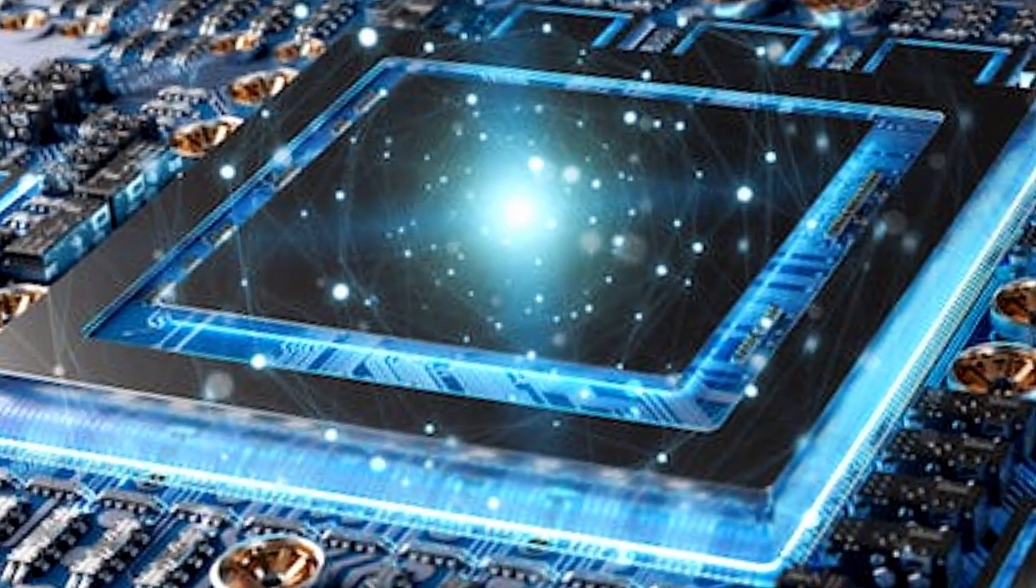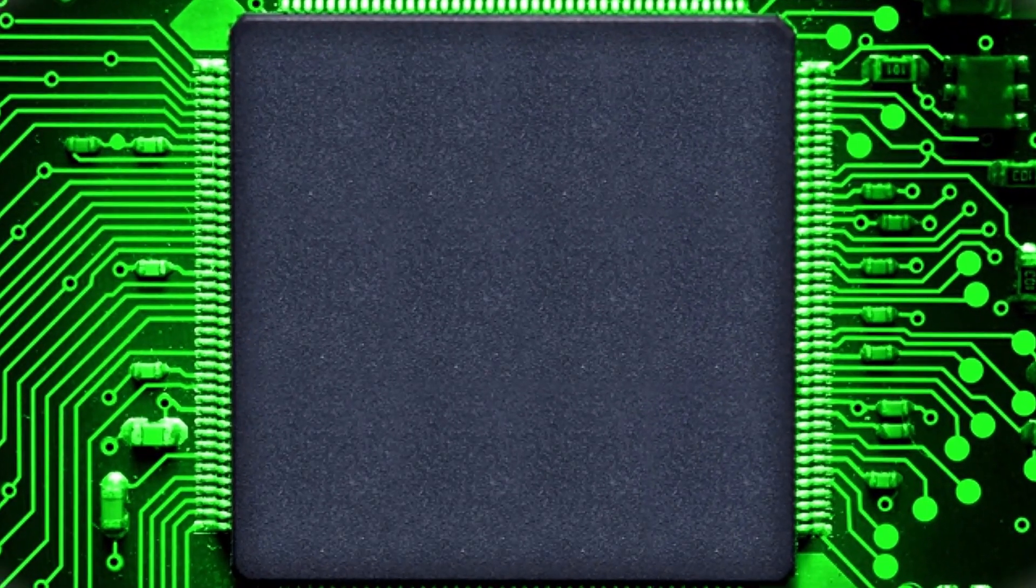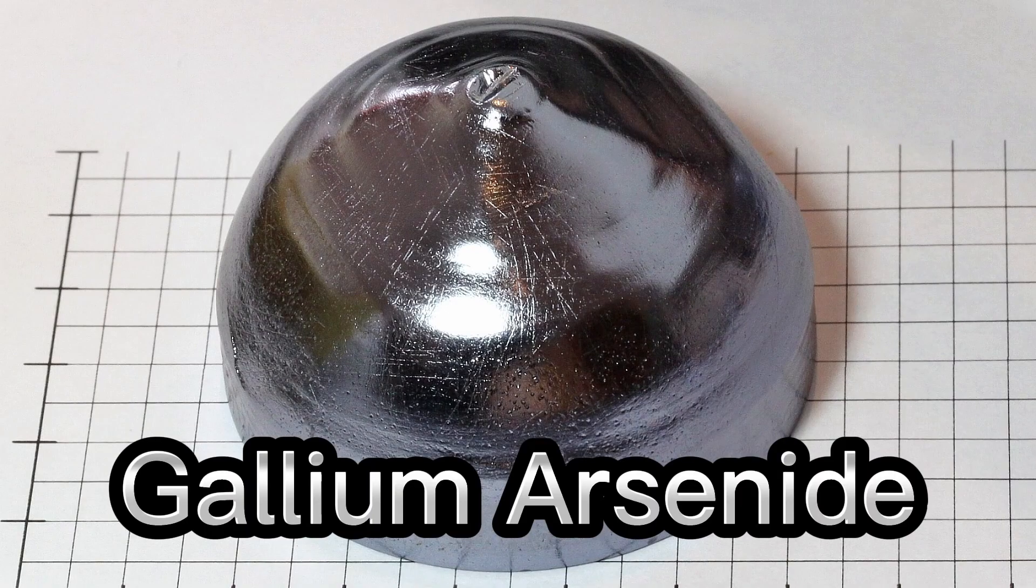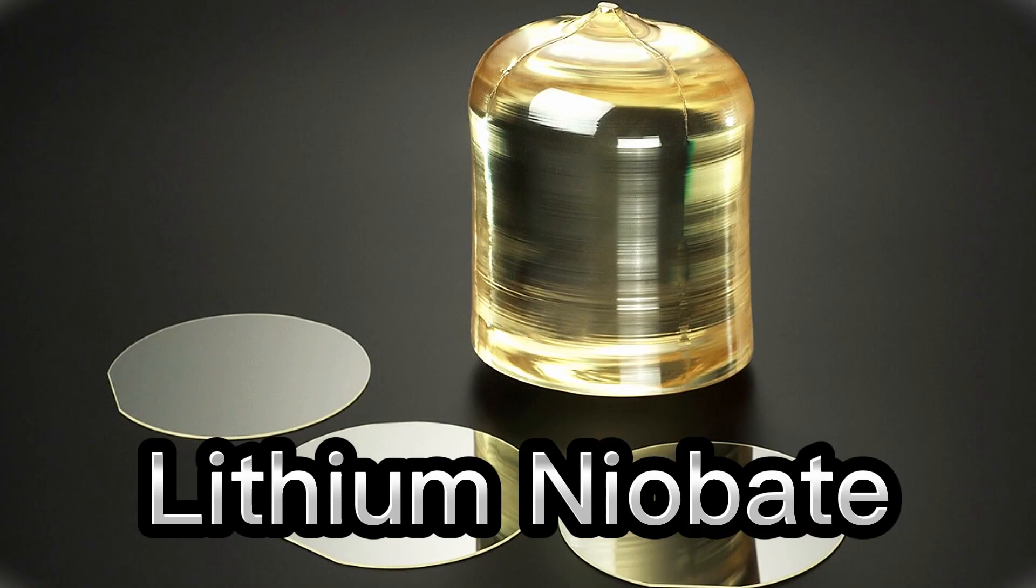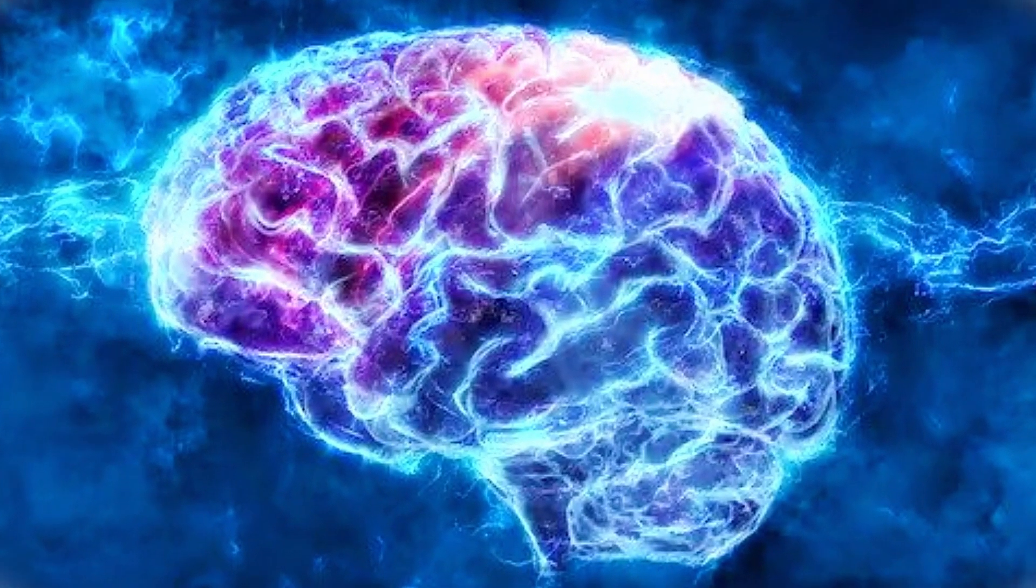For those who aren't aware, photonic chips use light instead of electricity to either convey or process information. The key materials to produce photonic chips are silicon, gallium arsenide, indium phosphide, lithium niobate, and germanium. With that in mind, let's dissect the aforementioned materials.